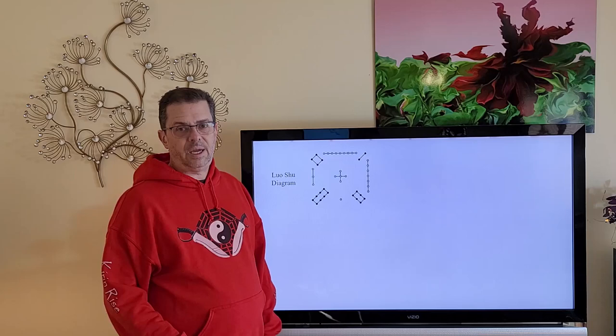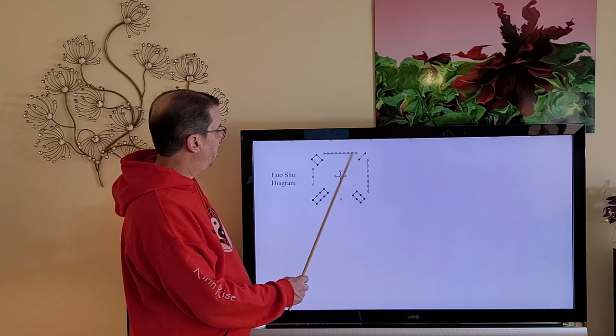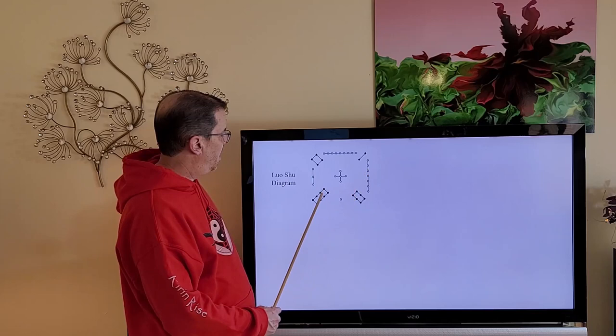It is said Luo Shu is a reduced representation of the earth. The Luo Shu places one through nine alternating yang and yin in the locations shown here. So one, two, three, four, five, six, seven, eight, and nine.